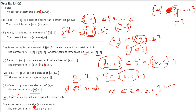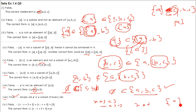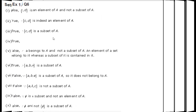Next: {x : x + 3 = 3} = φ. Solving: x + 3 = 3 gives x = 0. So we have element 0 in this set — it is not equal to phi. The correct form is {x : x + 3 = 3} ≠ φ. So this is false.